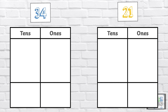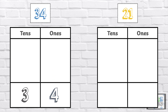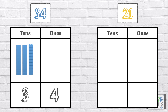Here are two numbers. Which number is greater? The number 34 has three 10s and four 1s: 10, 20, 30, 31, 32, 33, 34.